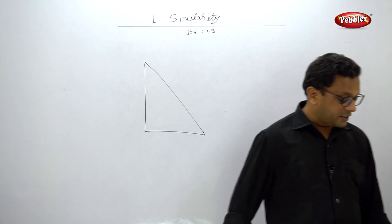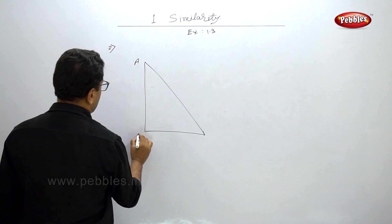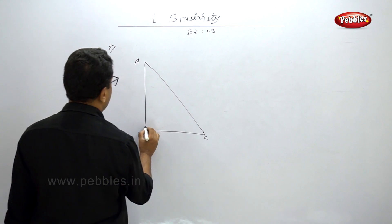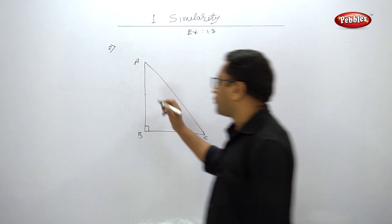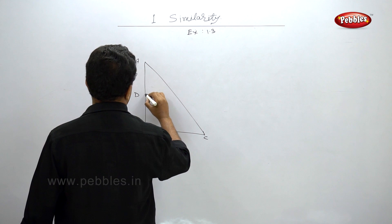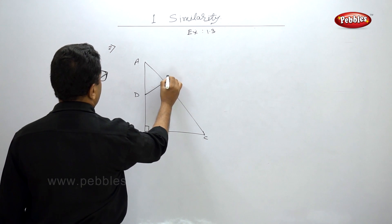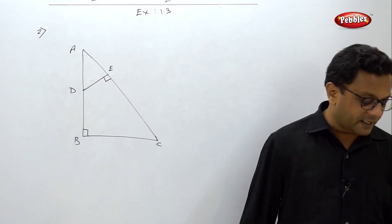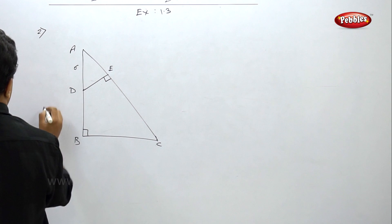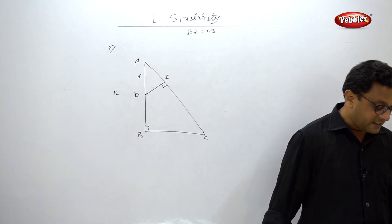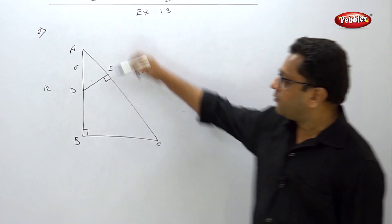Let us go to problem number 2. ABC is a right-angle triangle where angle B is a right angle. D is any point on AB and from D there is a perpendicular on AC at point E. AD is 6, AB is 12, and AC is 18. We have to find AE.